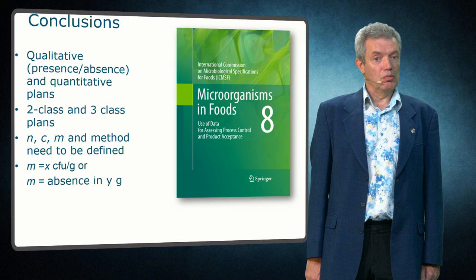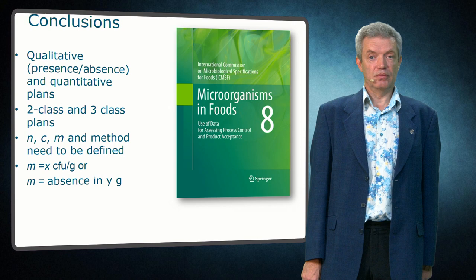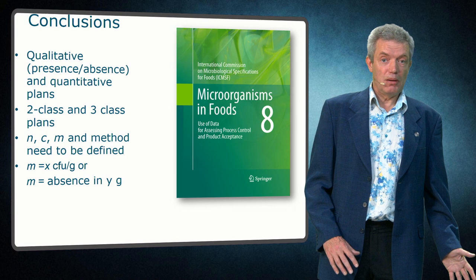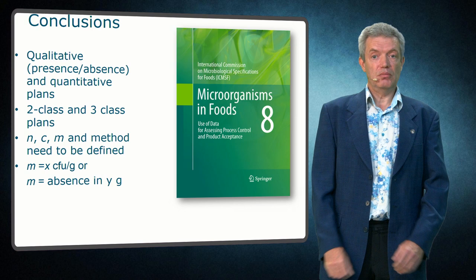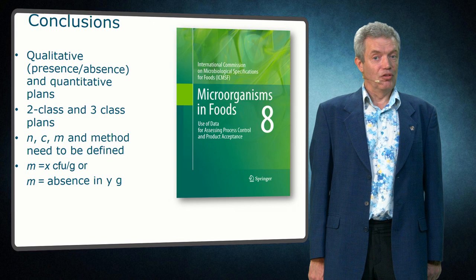So sampling plans come in several forms, and all aspects need to be specifically defined. On the one side there are qualitative and quantitative plans, and on the other side there are two-class and three-class sampling plans. Three-class sampling plans are always quantitative, so qualitative three-class plans do not exist, but the other three combinations do exist. Apart from the number of samples and the number of samples accepted to be positive, the method also needs to be defined, as well as the microbiological limit. The limit is defined as a concentration for quantitative tests, and absence in a defined analyzed sample weight for qualitative tests. Further information can be found in 'Microorganisms in Foods 7' published by the ICMSF.